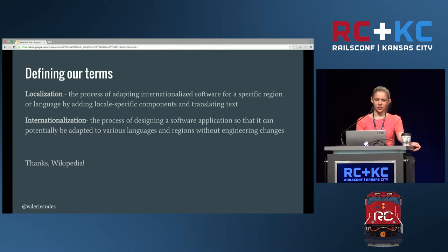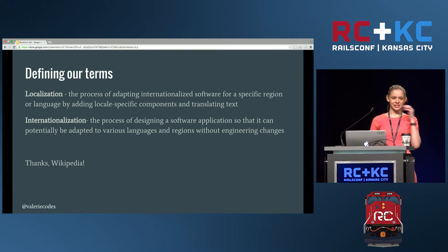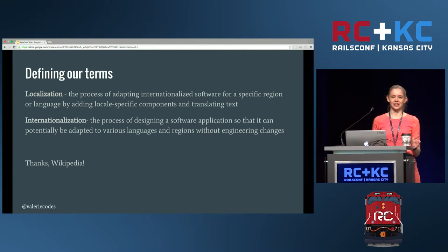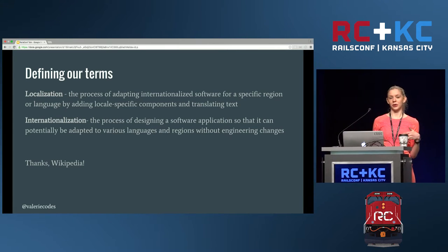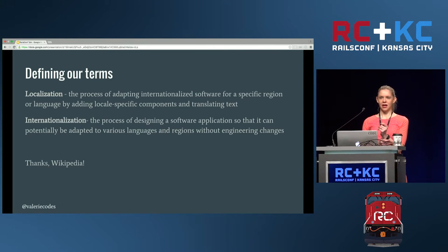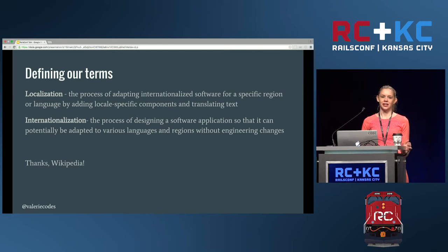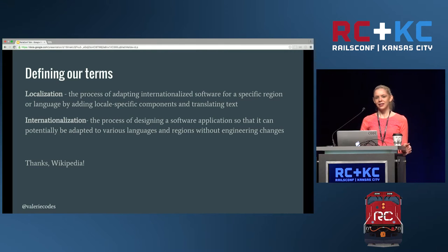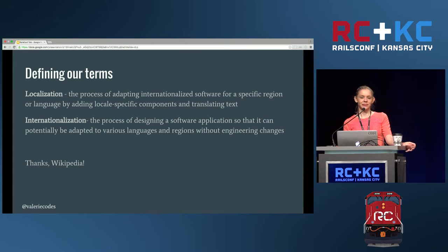We'll start out by defining our terms. Localization is the process of adapting internationalized software for a specific region or language by adding locale-specific components and actually translating the text. Internationalization refers to setting up your app in such a way that it can be translated. We'll be talking mostly about how to set yourself up for success when designing your app, even if you're not planning on translating right away.